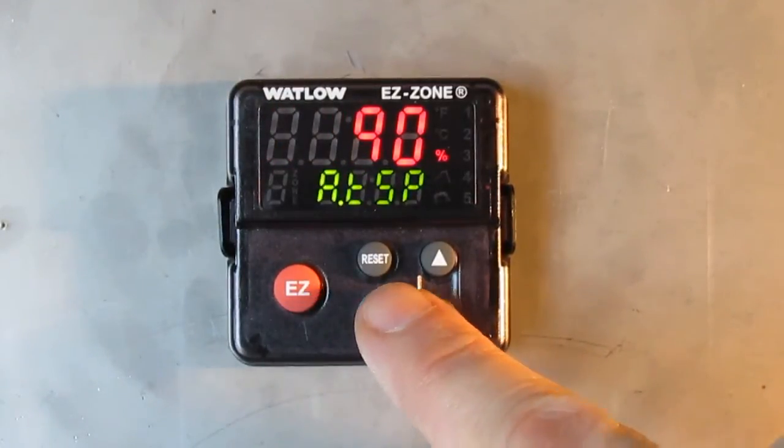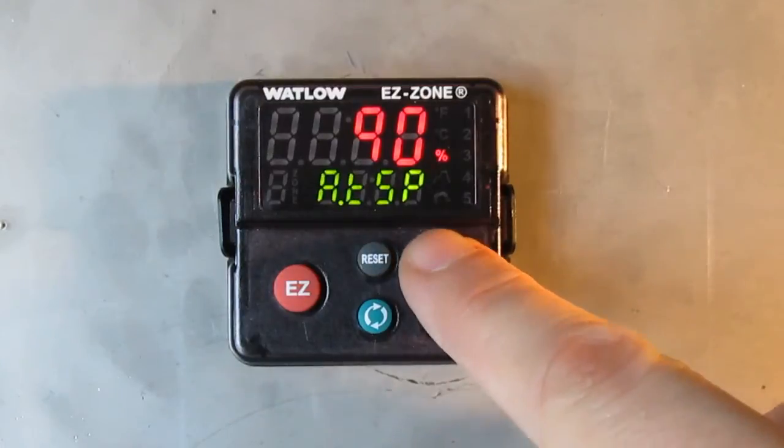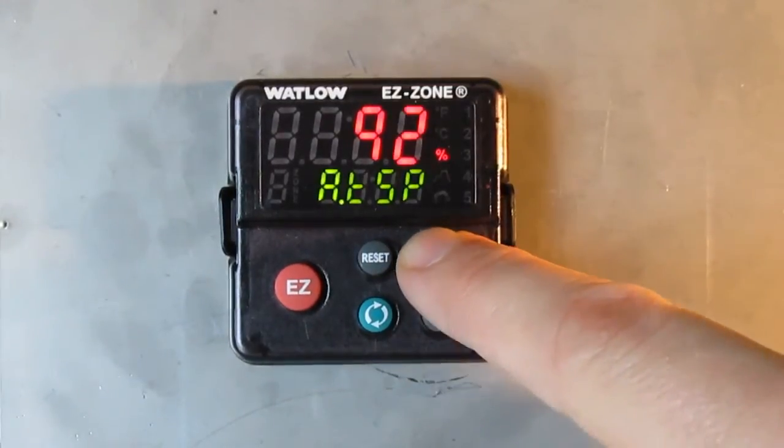Then you will see in percentage the output. You want to bring it to 100 using the up arrow.